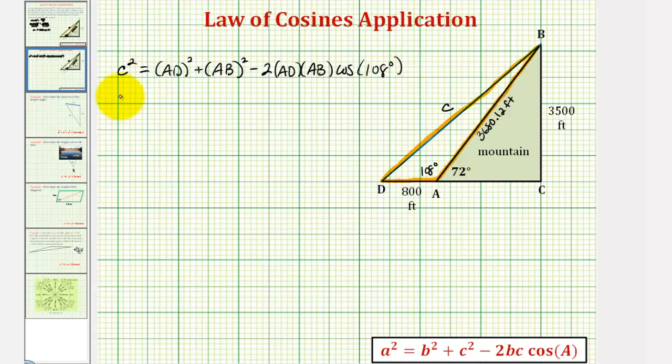Now we'll fill in the known values. We'd have C squared equals AD squared would be 800 squared, plus AB squared is 3680.12 squared minus two times 800 times 3680.12 times cosine 108 degrees. And now we'll go back to the calculator to determine C squared.